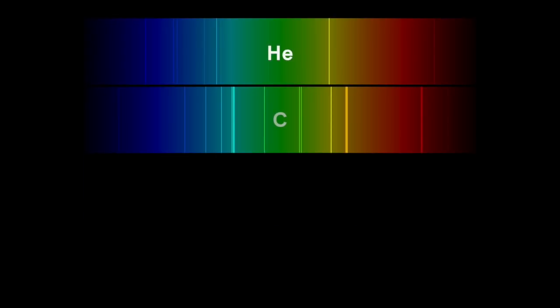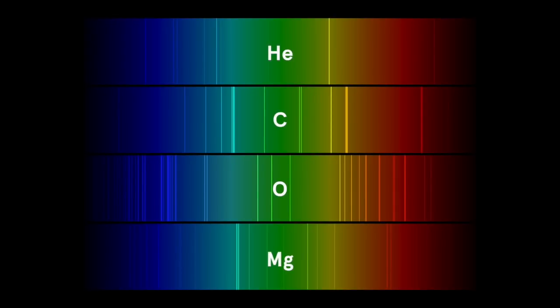In fact, each element in the periodic table, helium, carbon, oxygen, magnesium, all of them have a unique signature of wavelengths.